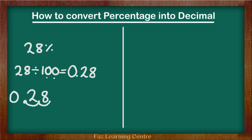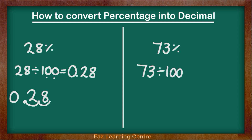Let's see the next example. The percentage I am going to use next is 73%. My sum now is going to be 73 divided by 100. This sum would help me get to a decimal. 73 divided by 100 equals...